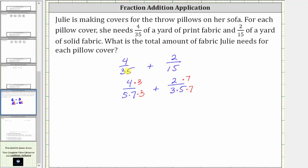And now we know that 4/35 is equivalent to 12 over 105, and then plus 2/15 is equivalent to 14 over 105. And now that we have a common denominator, we can determine the sum.